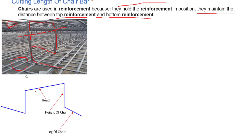Let's look at the different parts of the chair. This part is called the head of the chair. This section from this position up till here is the height of the chair. And these two — this one and this one — are called the legs of the chair.